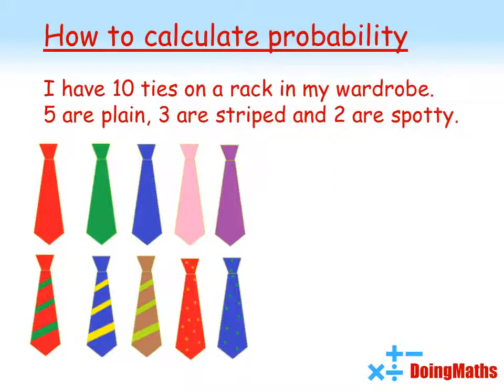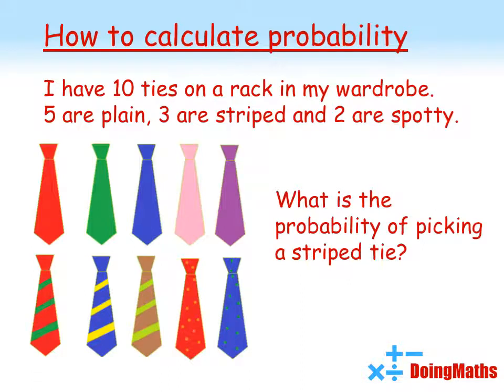So let's have a look at how we can calculate basic probability. In this example, I've got ten ties on a rack in my wardrobe. As you can see from the picture, five are plain ties, three are striped and two are spotty. I want to know what is the probability that if I just reach blindly into the wardrobe and pick out a tie, that I pick out a striped tie.